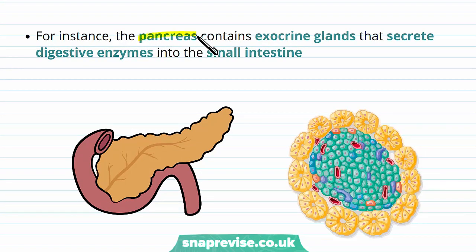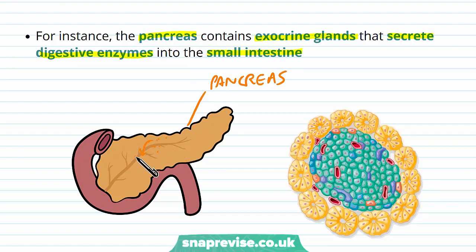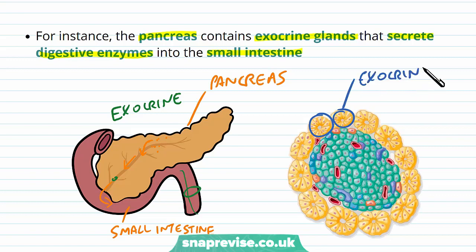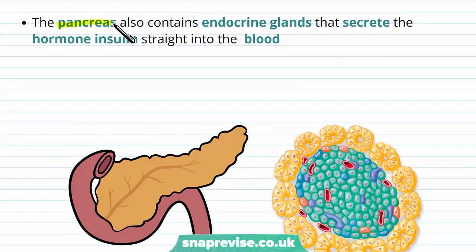To illustrate this, we can use the pancreas, because it contains both types of gland. It contains exocrine glands which secrete digestive enzymes into the small intestine. The pancreas produces digestive enzymes which get sent into the ducts of the pancreas and then released into the small intestine — this is exocrine because the substances have not entered the blood, they've entered tubes and ducts facing the outside world. Looking at a microscopic diagram of the pancreas, you can see the exocrine glands with little ducts and tubules in the center, which all connect up toward the small intestine. As well as exocrine glands, the pancreas contains endocrine glands which secrete the hormone insulin straight into the blood.